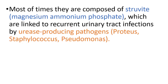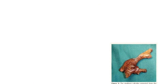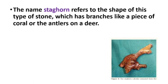Struvite stones are linked to recurrent urinary tract infections by urease-producing pathogens, for example Proteus, Staphylococcus, and Pseudomonas. The name staghorn refers to the shape of this type of stone, which has branches like a piece of coral or the antlers on a deer.